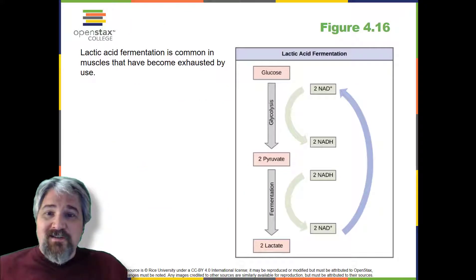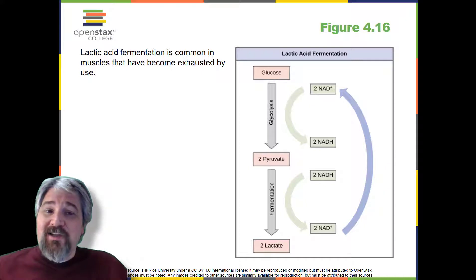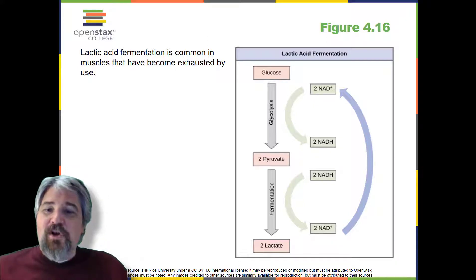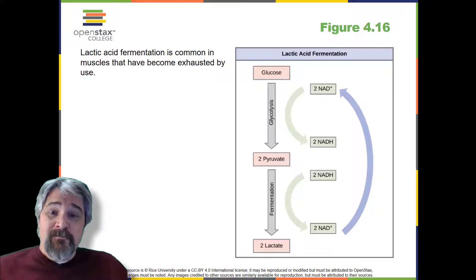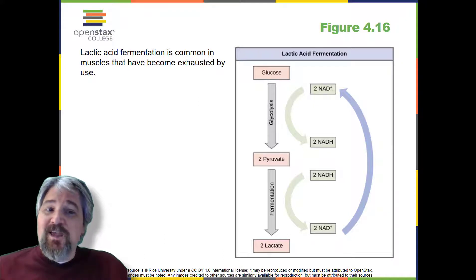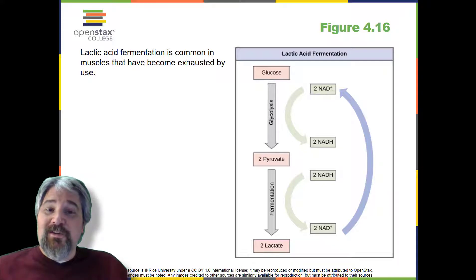Lactic acid fermentation. The fermentation method used by animals and some bacteria, like those in yogurt, is lactic acid fermentation, as depicted here. This occurs routinely in mammalian red blood cells and in skeletal muscle that has insufficient oxygen supply to allow aerobic respiration to continue — that is, in muscles used to the point of fatigue. In muscles, lactic acid produced by fermentation must be removed by the blood circulation and brought to the liver for further metabolism.